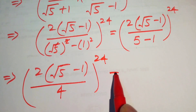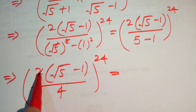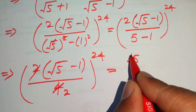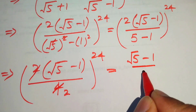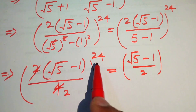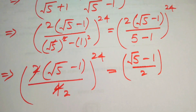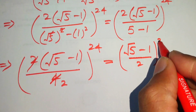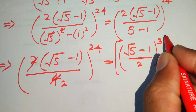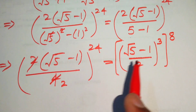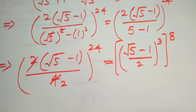We see that 2 divided by 4 simplifies, giving us (square root of 5 minus 1) over 2, raised to the power of 24. We rewrite the exponent 24 as 3 times 8, since 3 times 8 equals 24.